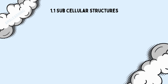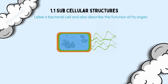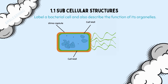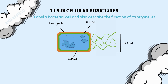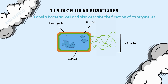In exams, you may be asked to label a bacterial cell or describe the function of its organelles. It is therefore important that you understand that the slime capsule and the cell wall protect the cell. The flagella brings about movement, which means that if a bacterial cell does not have flagella, it will not be motile — it will not move.